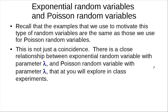We've looked at two types of random variables: exponential random variables and previously Poisson random variables. Recall that we used the same examples to motivate both types — this is not a coincidence. There's a close relationship between exponential random variables with parameter lambda and Poisson random variables with the same parameter. In class, you'll perform some experiments and see this relationship yourself. That's it for the exponential random variables.